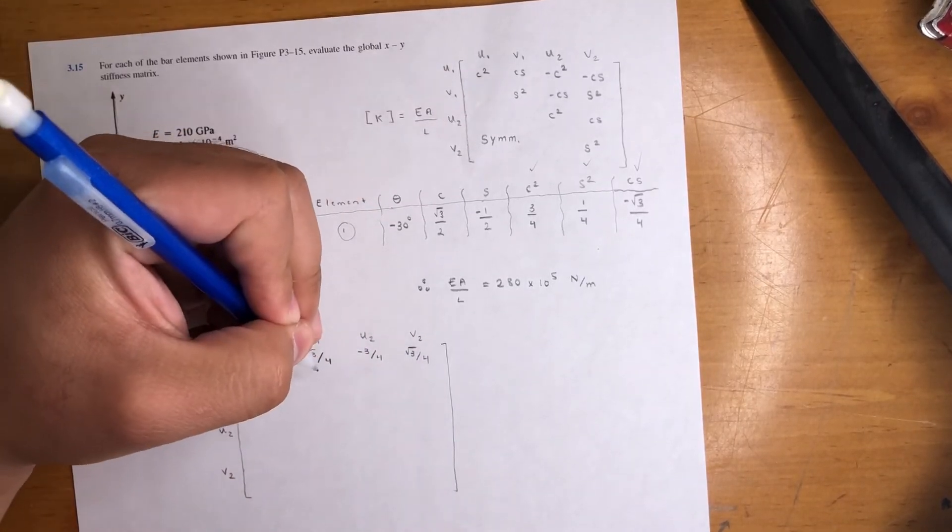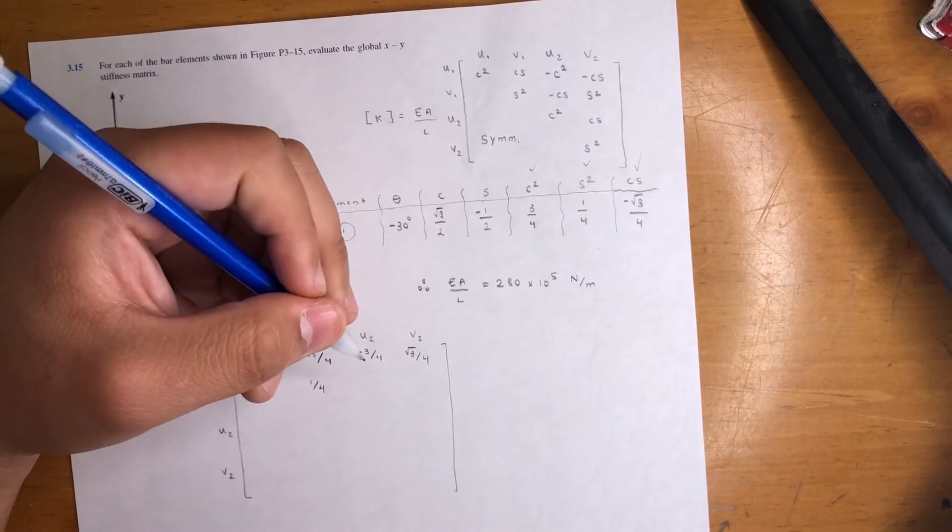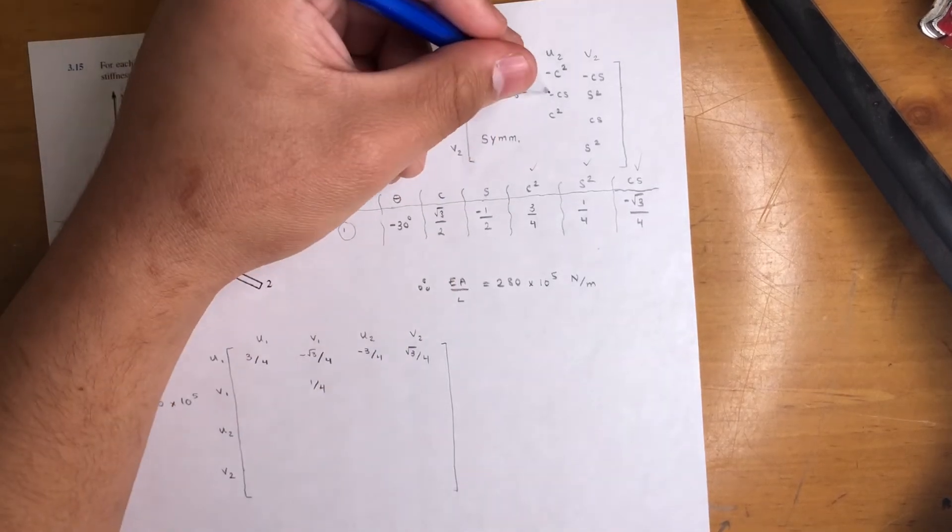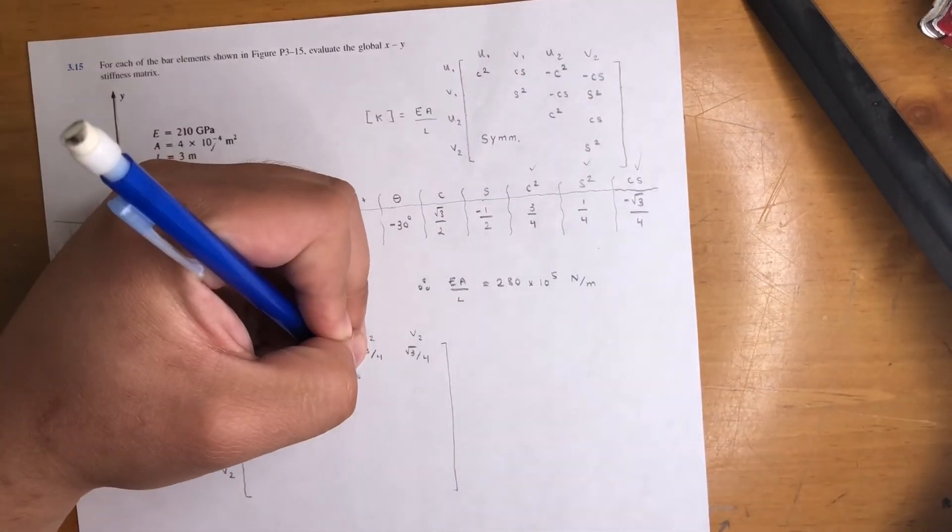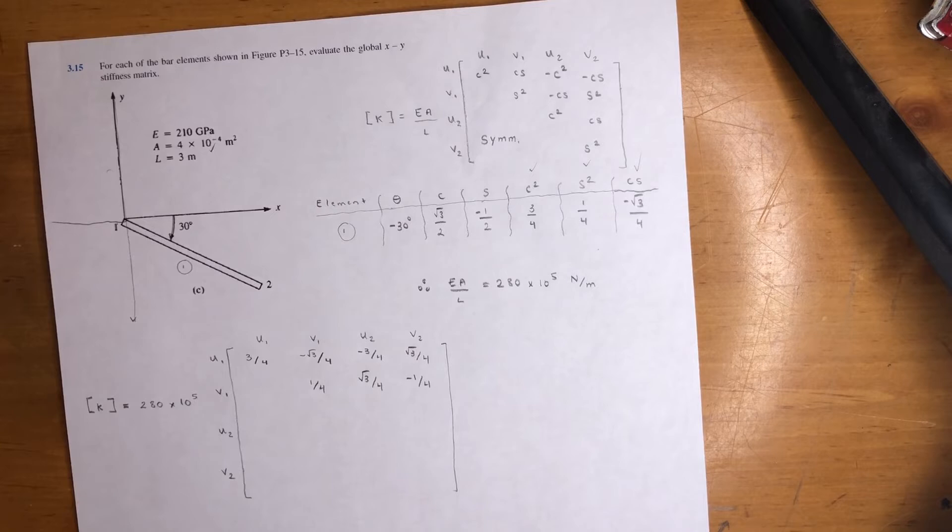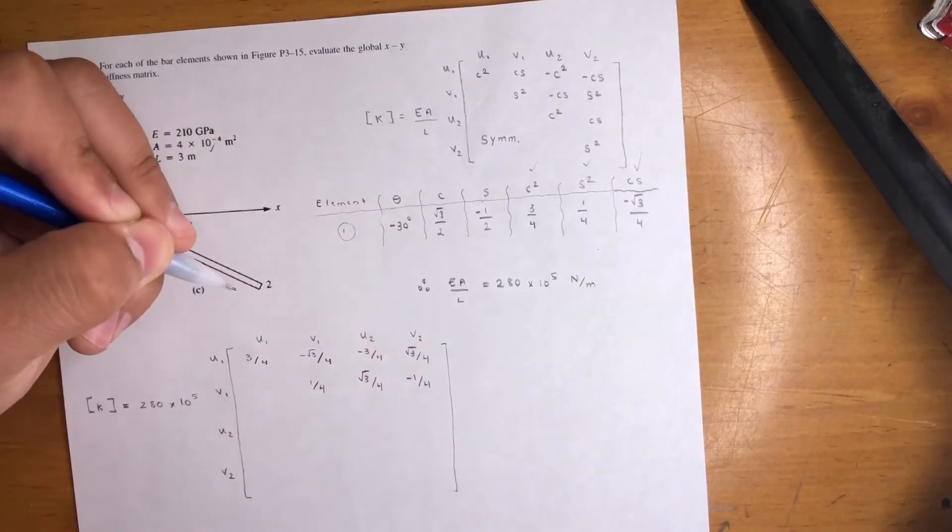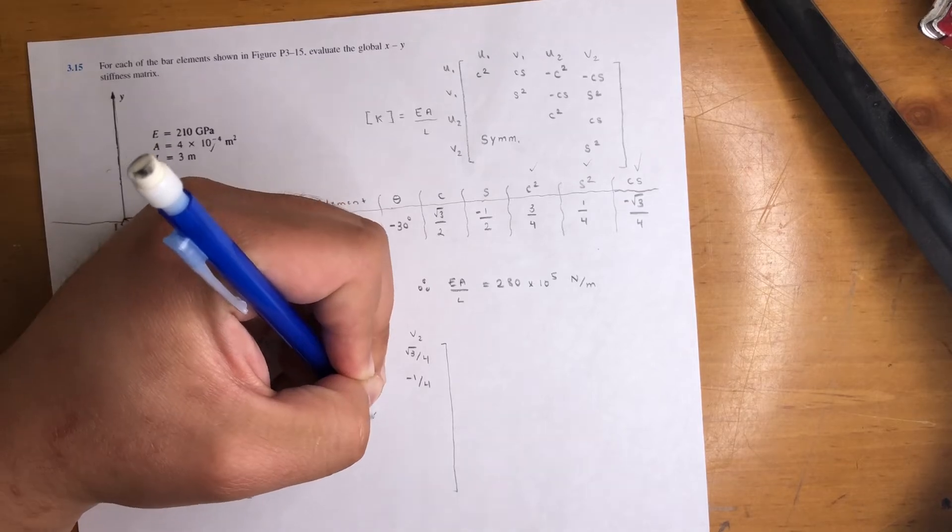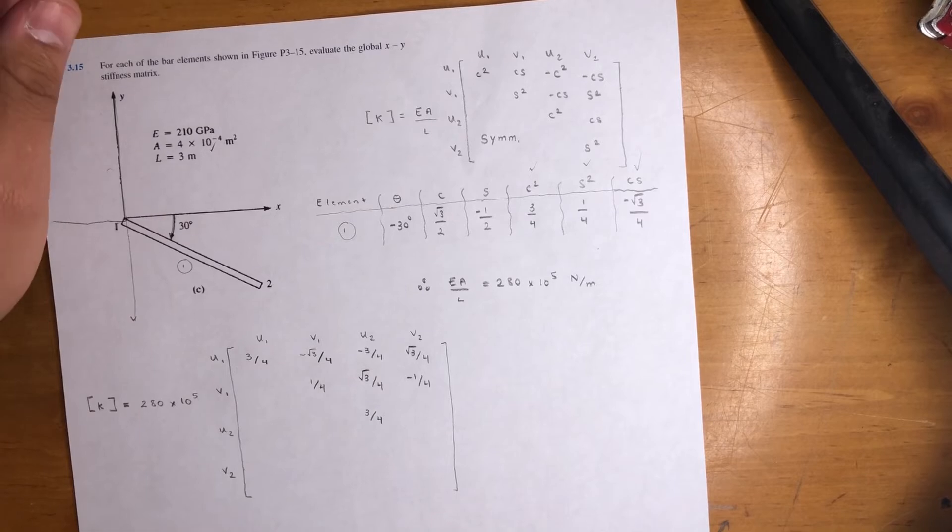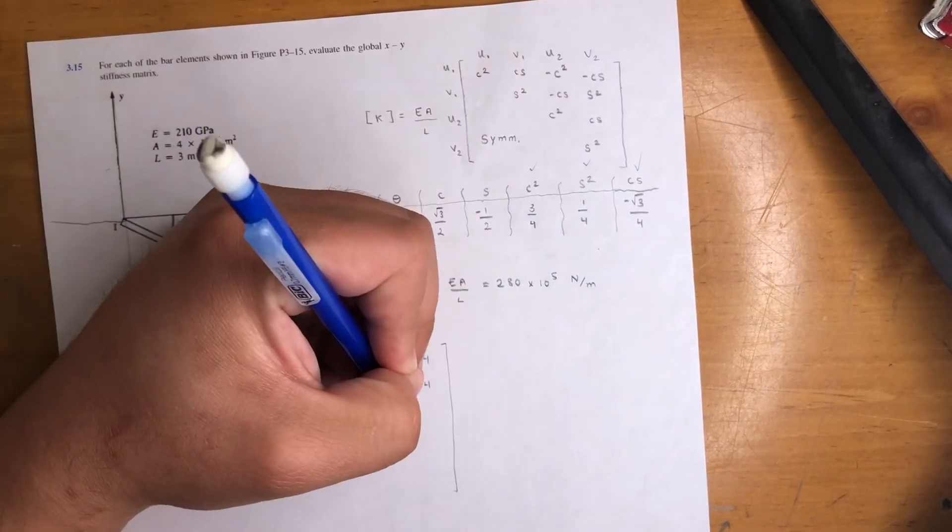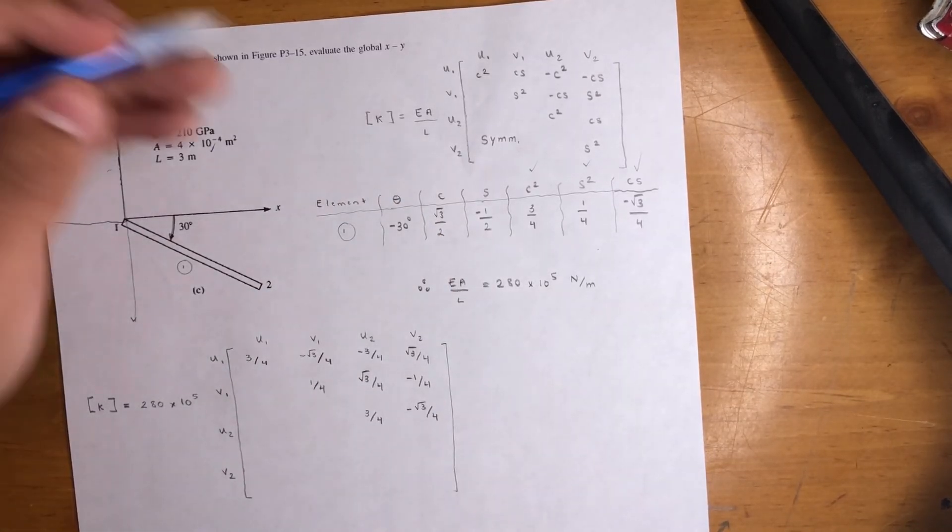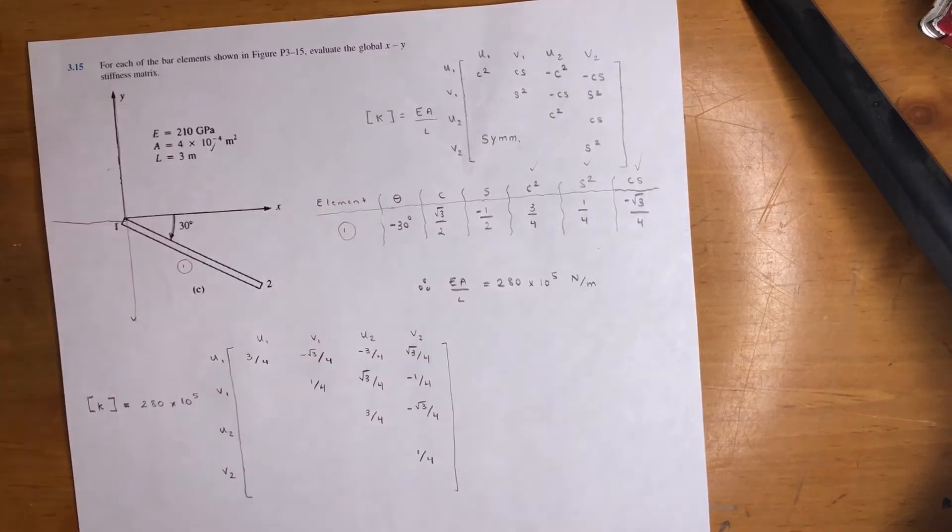Next row is S squared, that is one fourth. Next column is negative C S. So that is again, negative C S and there's already a negative, so it's going to be a positive radical three over four. And finally, negative one fourth. Keep it going. Now we're here. C squared, that is positive three fourths. Probably did the matrix a little too weird, but whatever, it doesn't matter. C S that is negative radical three over four. And finally we have S squared, which is one fourth.